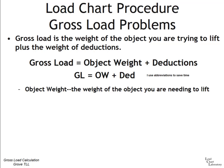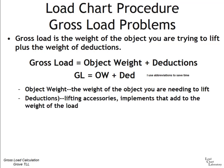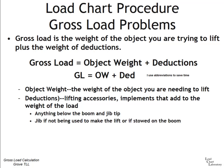The object weight is the weight of the object you need to lift. The deductions are the lifting accessories and implements that add to the weight of the load — this includes anything below the boom and jib tip. If the jib is not being used to make the lift, or if the jib is stowed on the boom, it counts as a deduction. But if you're lifting off the jib, do not deduct the jib.